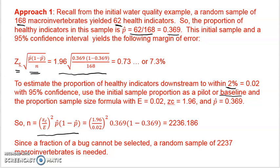So using the sample size formula with the margin of error being 2% or 0.02, the critical value being 1.96, our baseline percentage of 0.369, plugging that into your sample size for the proportion formula...